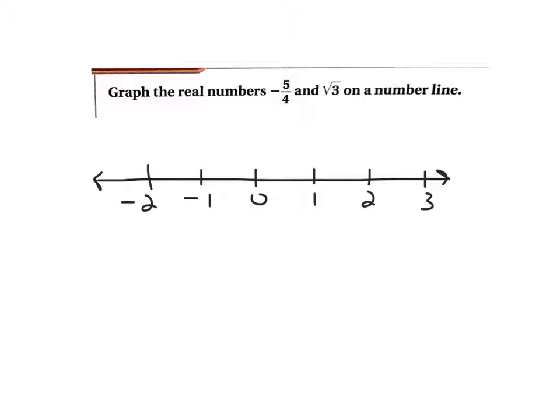This first problem says just put these two numbers on a number line. Negative five-fourths. You can either divide that by hand or know it's negative one and one-fourth, or punch it in your calculator. You get negative one point two five. We should put it about right there. Negative five-fourths.